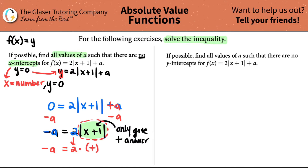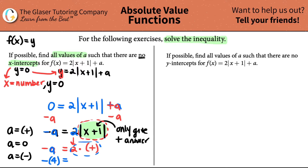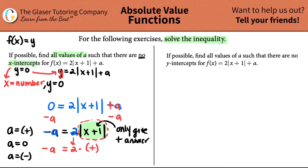So now we just have to separate a into basically three categories: a could be a positive number, a could be 0, or a could be a negative value. If we plug in a positive value for a — let's say it's 4 — then negative 4 equals 2 times a positive answer. But negative 4 will never be able to equal a positive value. So we know that if a is 4, there's not going to be any x-intercepts. So this is an important answer to keep.